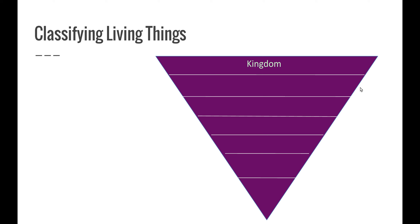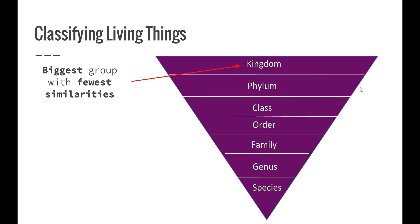We start off with the kingdom. The kingdoms are divided into the six that we looked at in the previous video — six kingdoms. Those kingdoms are then divided into phylum, phylum into class, order, family, genus, and species. The kingdom is the biggest group with the fewest similarities. If we take the animal kingdom for example, there are lots of different animals that fit into it, but there aren't many that humans have a great deal of similarities with. You wouldn't think there are many similarities between humans and a slug, but there are enough for us both to fit into the kingdom Animalia.